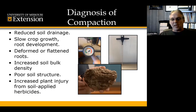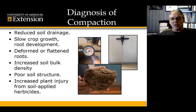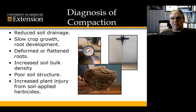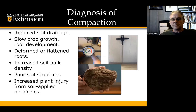Another method would just be digging up soil samples or pieces of soil and looking at their soil structure, how they've changed in different locations. With this photo on the bottom, you can see the horizontal plate structure showing some compaction from field traffic.